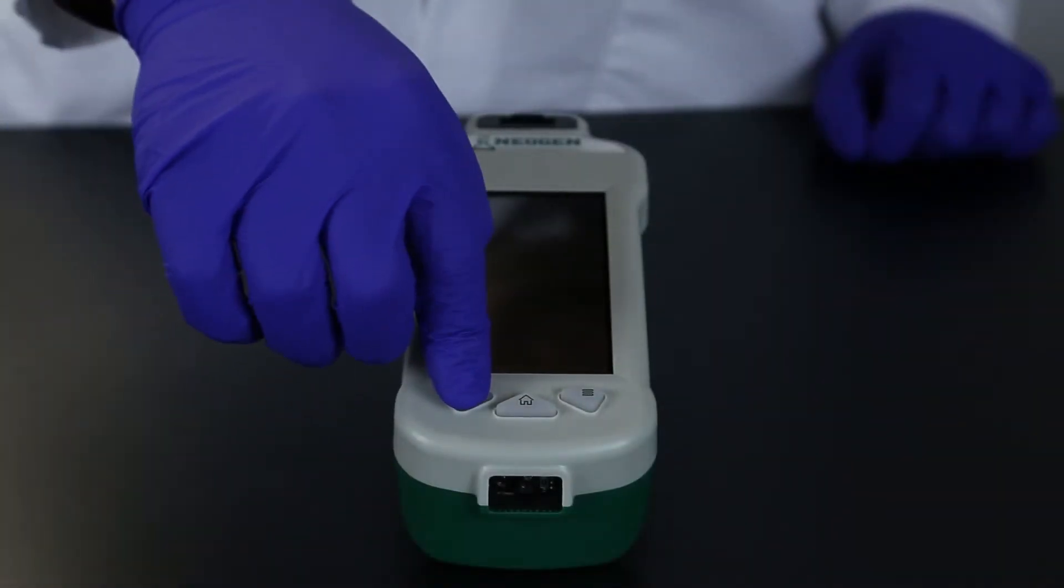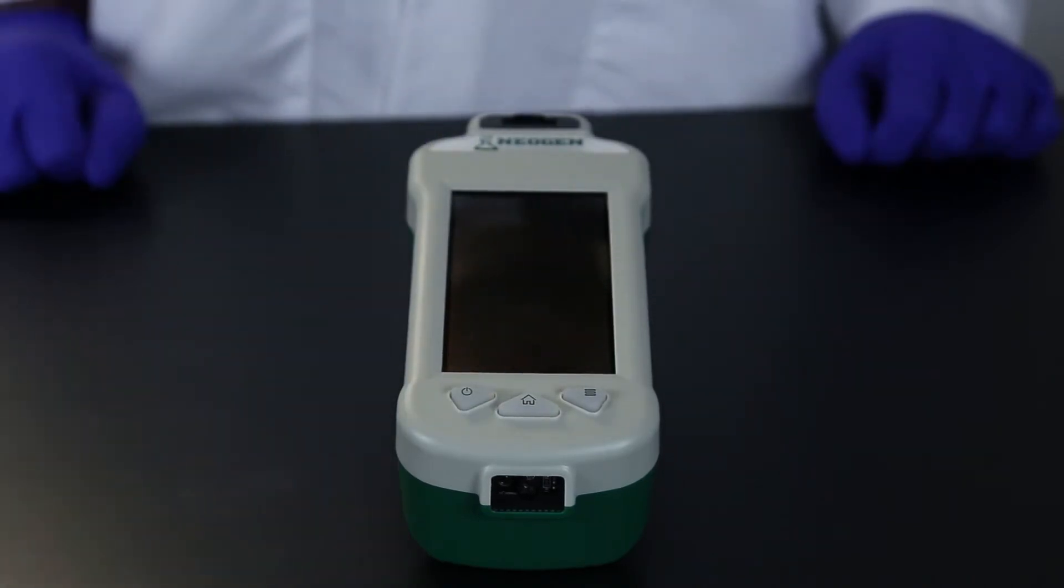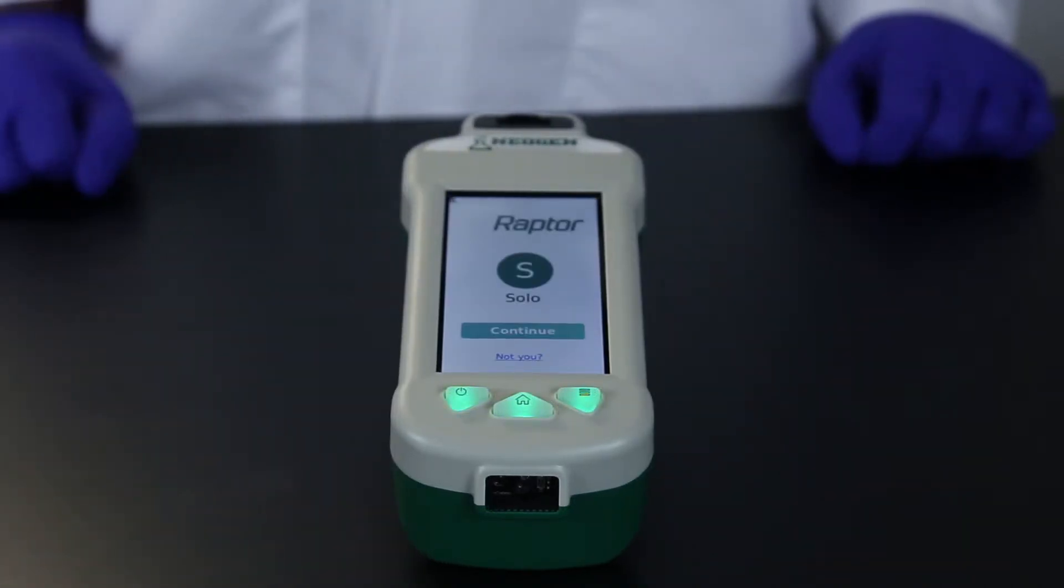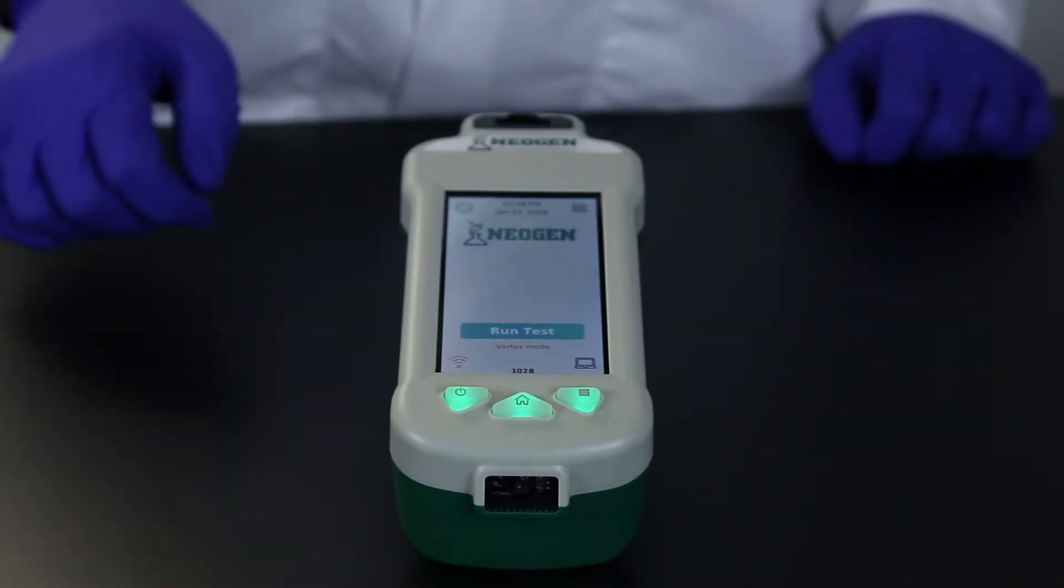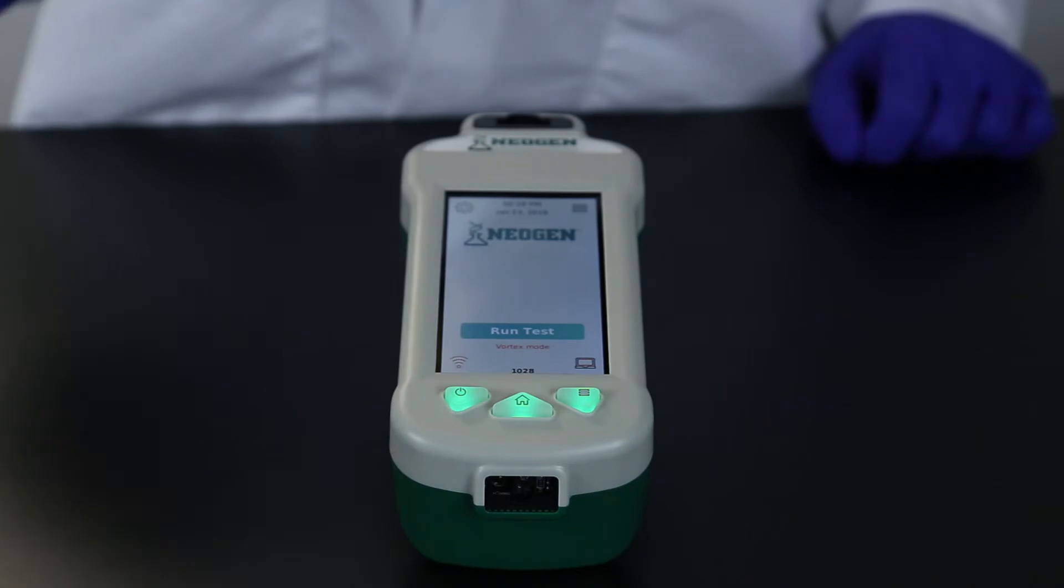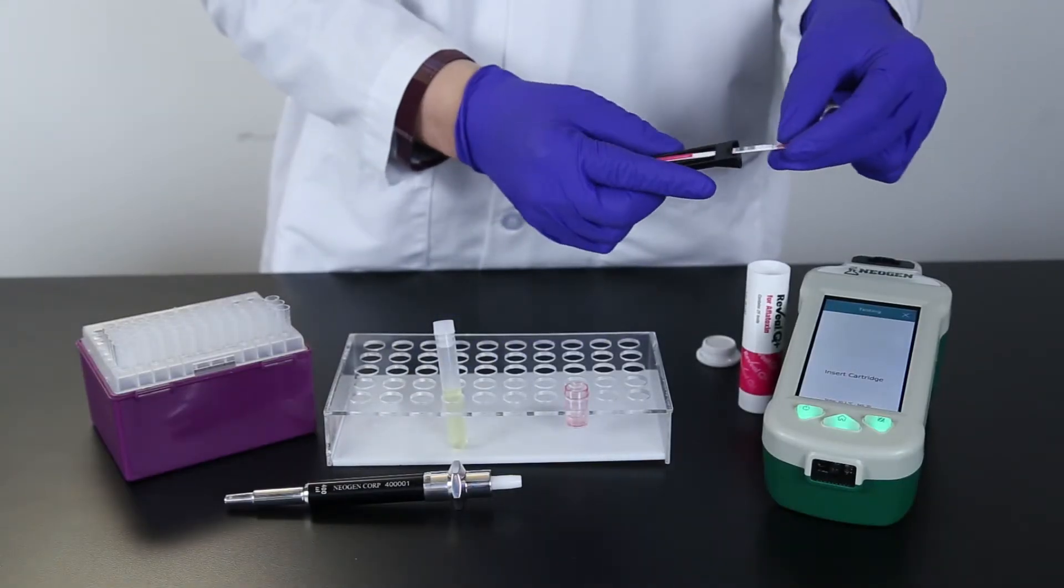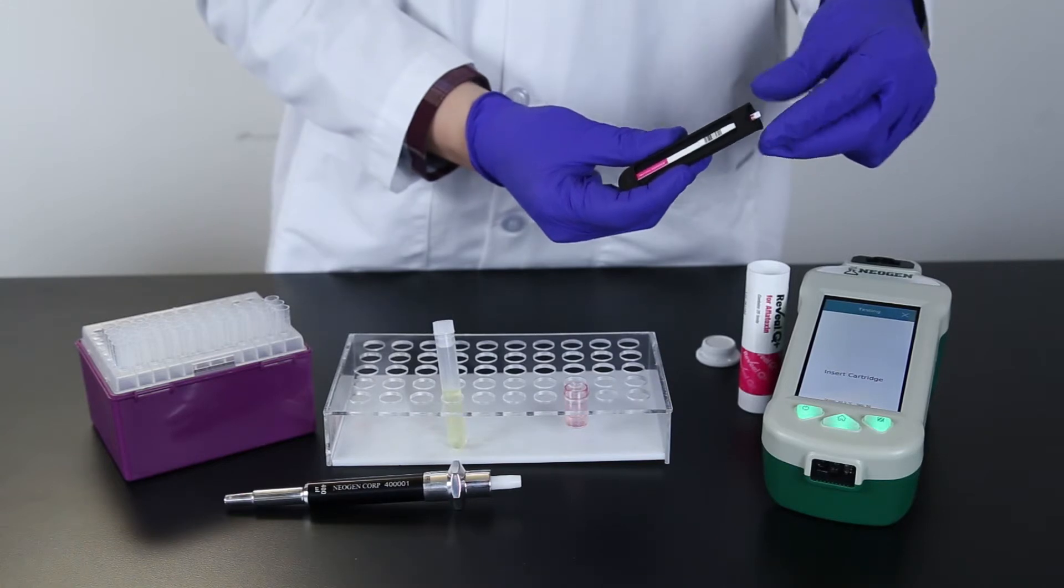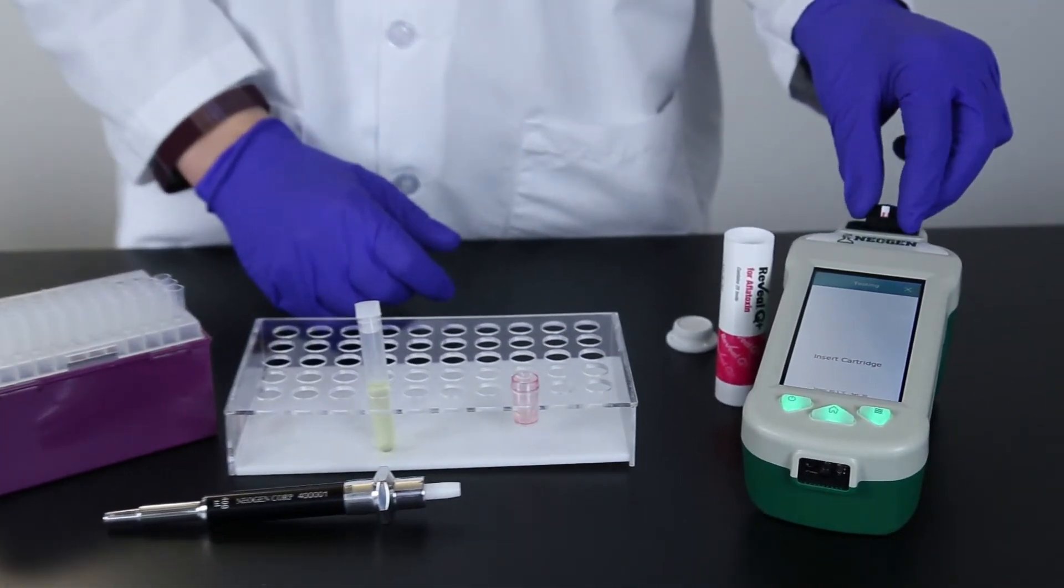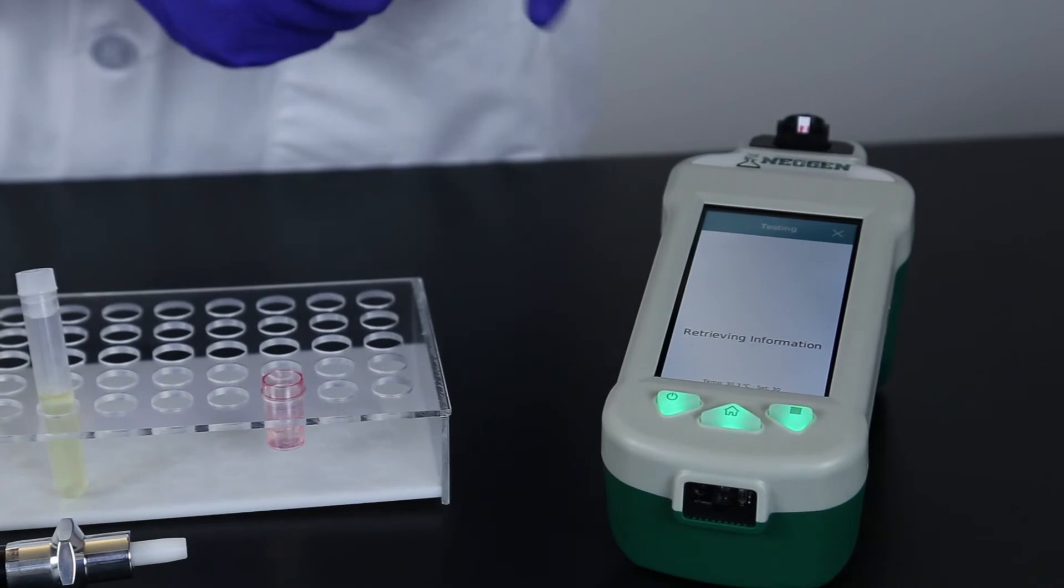Turn on the Raptor Solo by pressing the power button on the bottom left-hand corner. The system will initialize and display the home screen. Press the Run Test button. Place a test strip into the Raptor cartridge. Place the cartridge in the Raptor Solo system. The Raptor Solo system reads the barcode on the strip.